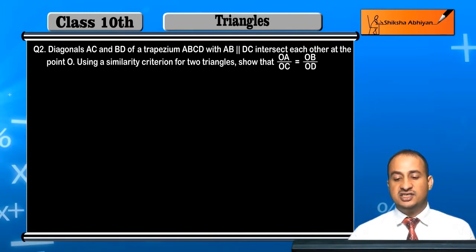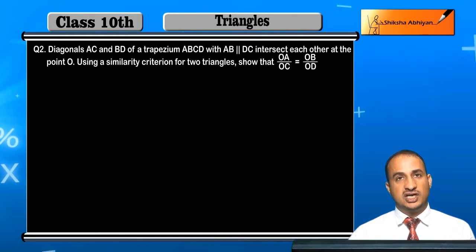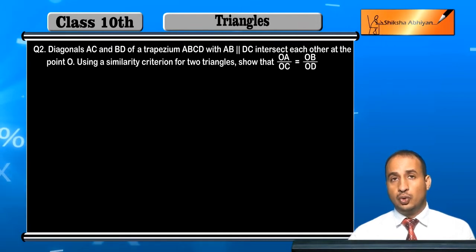Here is trapezium ABCD. Diagonal AC and BD intersect each other at point O. Using similarity criterion for two triangles, show that OA/OC = OB/OD. You have to prove this.